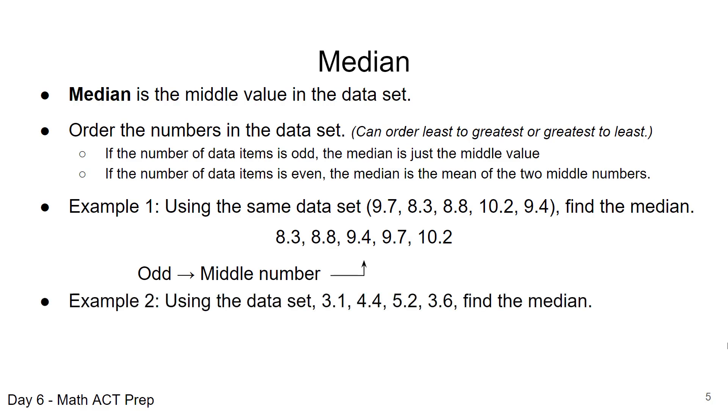Let's look at another example where we have an even number of values in our data set. Find the median of this data set. When we order from least to greatest, we have our two values, 3.6 and 4.4, which are in the two middle positions. We have to find the average of those two values and that gives us an average of 4. So in this case, our median is 4.